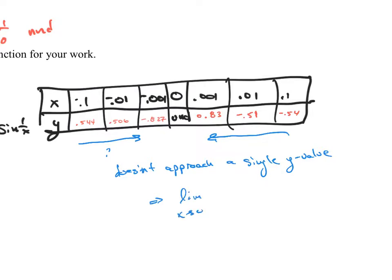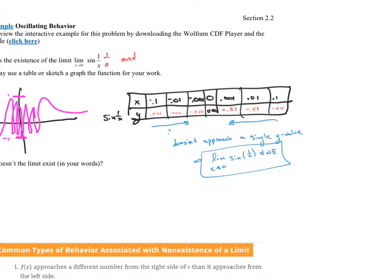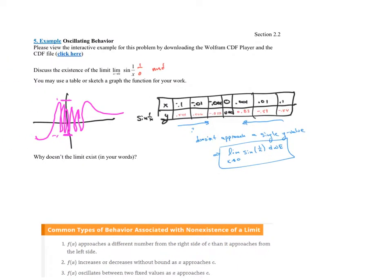If it doesn't approach a single y value, that means the limit as X approaches zero of sine of 1 over X does not exist. That's what that means. You can see this on the graph because you don't see a single y value that it approaches. It seems that it approaches virtually every y value between negative 1 and 1.